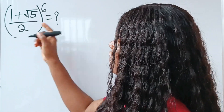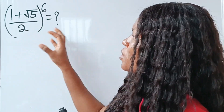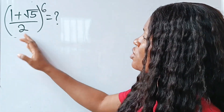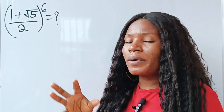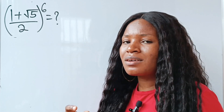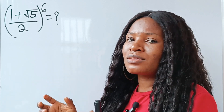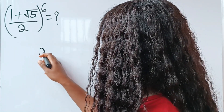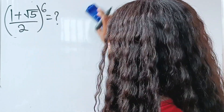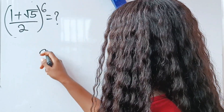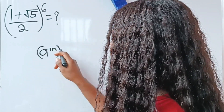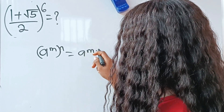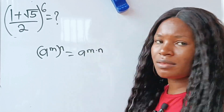Now, first, we need to know that this is what under exponents or indices, and this is to the power of 6. So all we need to do is to simplify it to get our solution. But before that, you need to recall that x — a to the power of m, raised to the power of n — is the same thing as a to the power of m multiplied by n.